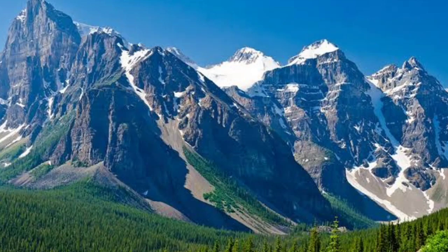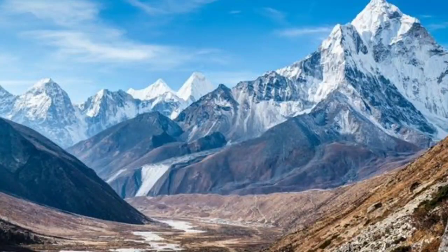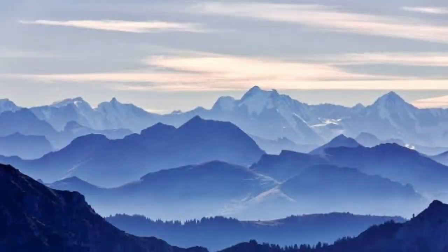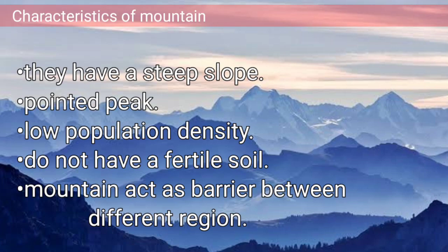A single mountain is a very rare phenomenon. The question is: what is the difference between hills and mountains? There is no specific definition or classification between hills and mountains. However, some geologists have said that more than 600 meters in altitude from the sea level can be termed as a mountain. So there is no specific classification or differentiation between hills and mountains.